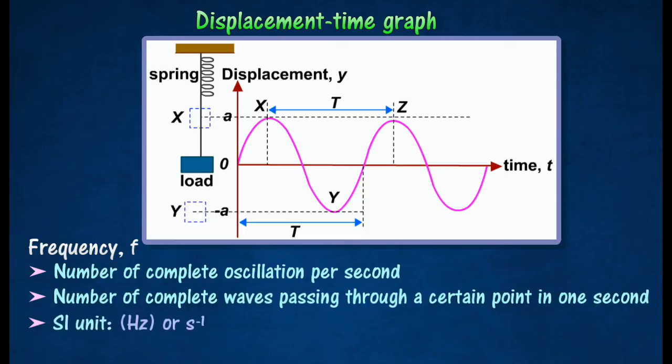The SI unit for frequency is Hertz. One Hertz is defined as one complete oscillation cycle made by a particle in one second.